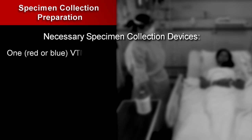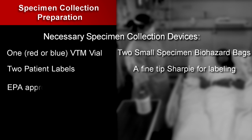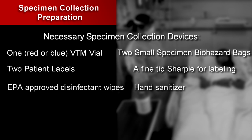Collect the necessary specimen collection devices: one red or blue VTM vial, two small specimen biohazard bags, two patient labels, a fine tip Sharpie for labeling, EPA-approved disinfectant wipes for emerging pathogens, hand sanitizer, a sharps container, and a flashlight.